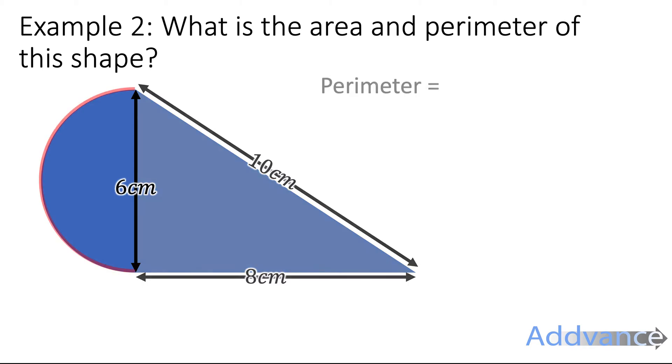We're going to start by working out the perimeter, and to do that we need to know the length of this curved edge here. And what you need to realize is this is half the circumference of a circle, because it's a semicircle, that's half a circle. The curved edge is half the edge of a semicircle.